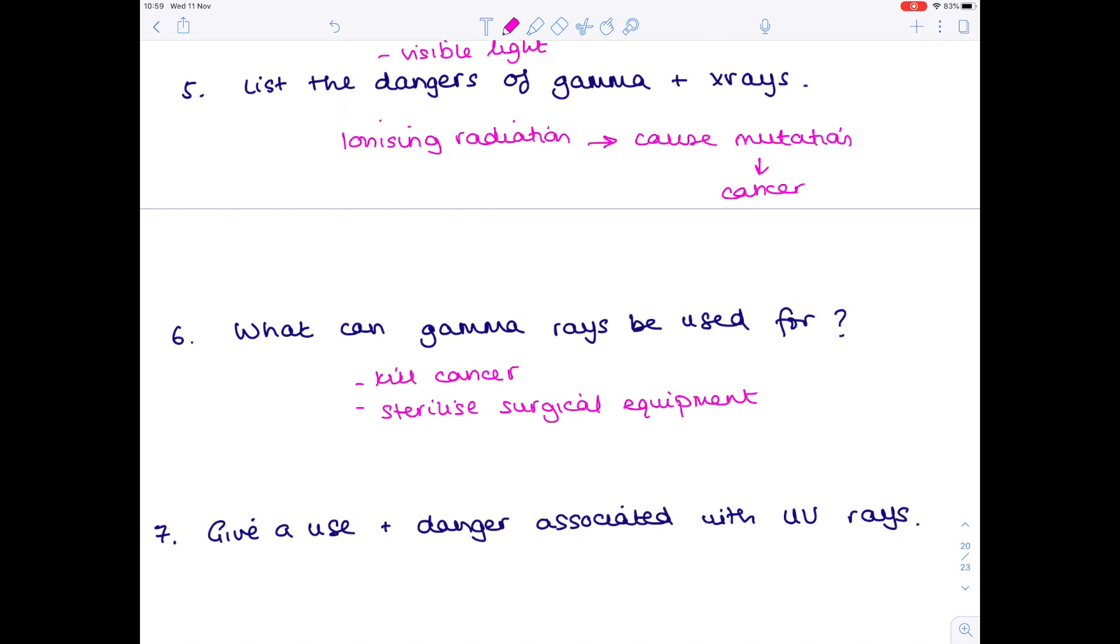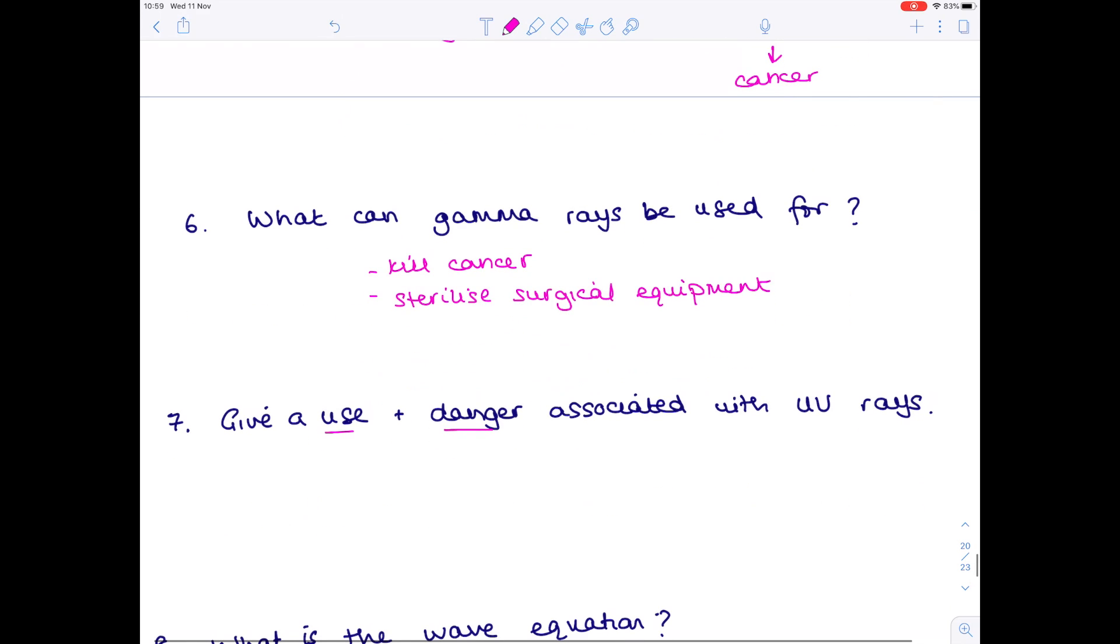Question seven: give a use and danger associated with ultraviolet rays. The danger: they can cause skin cancer or sunburn. Uses include fluorescent tanning beds, and you can also use them to detect forged bank notes.